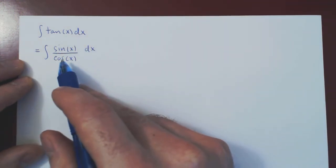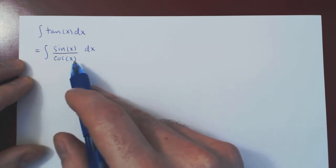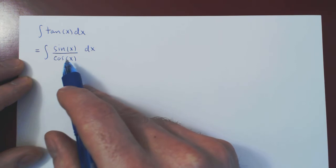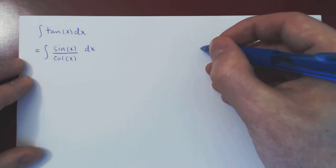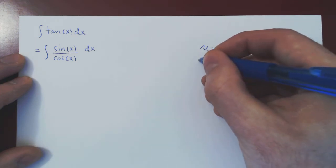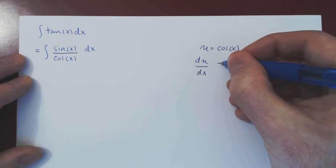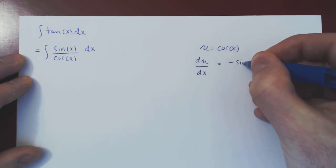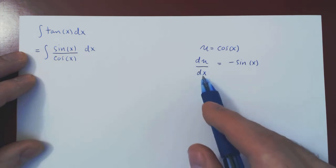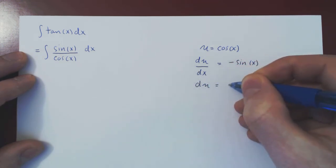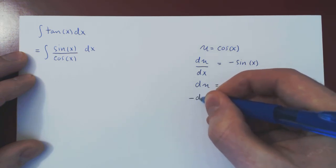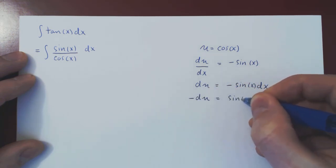We now have the perfect setup for a u-substitution. The derivative of cos is negative sine, so up to a sign, sine is multiplying the expression. This is a perfect setup with u being cos of x. Differentiating, du over dx is negative sine of x. Multiplying across by dx gives du equal to negative sine of x dx. Negating both sides, negative du equals sine of x dx.